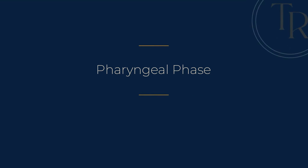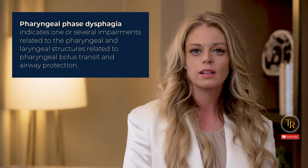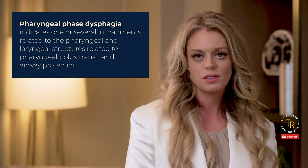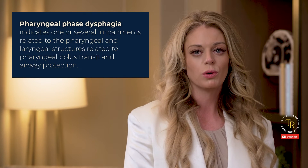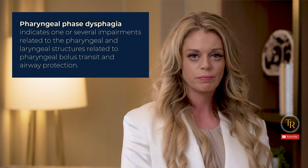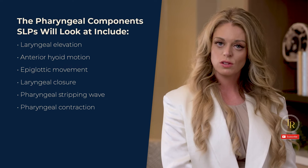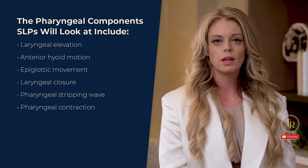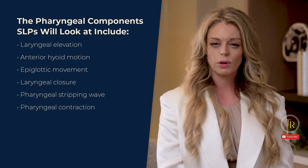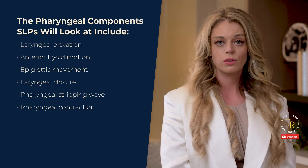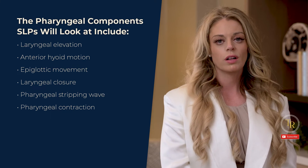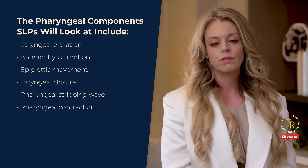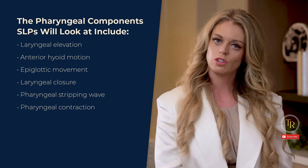The second phase of swallowing we'll talk about is the pharyngeal phase. Pharyngeal phase dysphagia indicates one or several impairments related to the pharyngeal and laryngeal structures for pharyngeal bolus transit and airway protection. Going back to the 17 swallowing components assessed during the MBS-IMP, the pharyngeal components SLPs will look at include laryngeal elevation, anterior hyoid motion, epiglottic movement, laryngeal closure, pharyngeal stripping wave, and pharyngeal contraction.